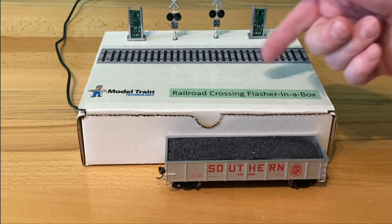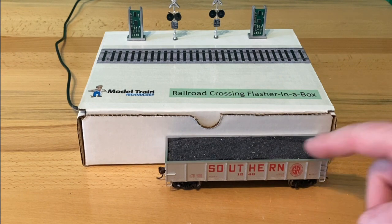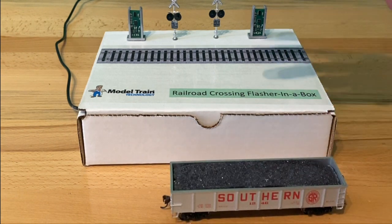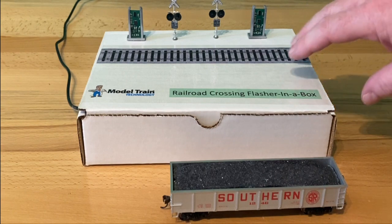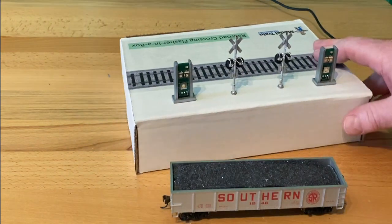So what we're going to do is we're going to use our railroad crossing in a box here. We're in the middle of putting this together for a customer, and I'm going to flip this around so you can see what we're doing and how this auto-ranging setup works.